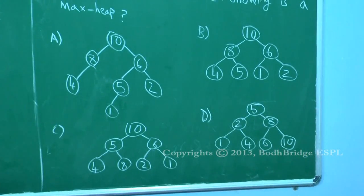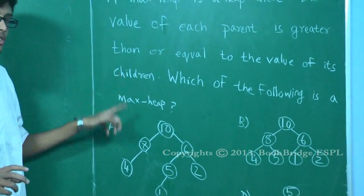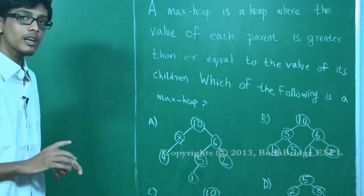So this is known as the heap property. The value of each parent is greater than or equal to the value of its children. Heaps generally have another property also. A heap should be a complete binary tree.